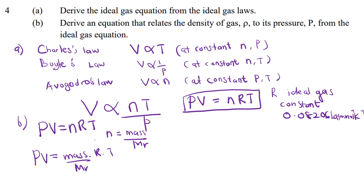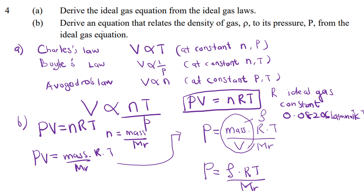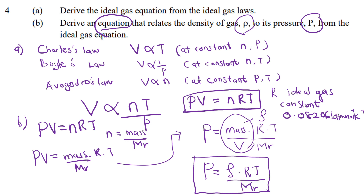Since mass/volume is density (ρ), the equation becomes P = ρRT/M. This is the equation that relates density to pressure. That completes question 4, parts a and b.